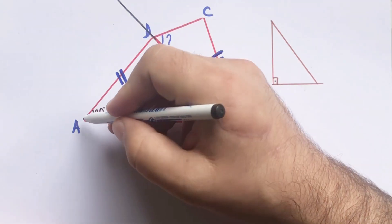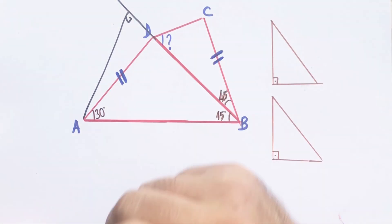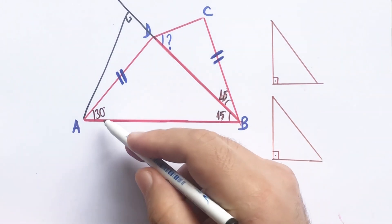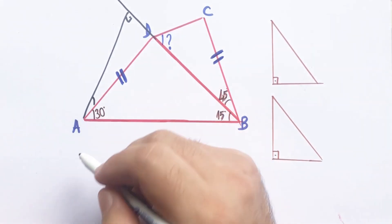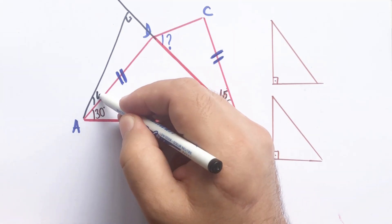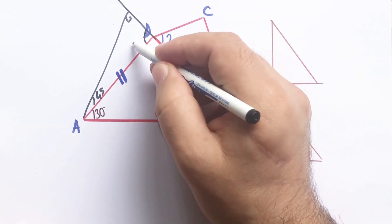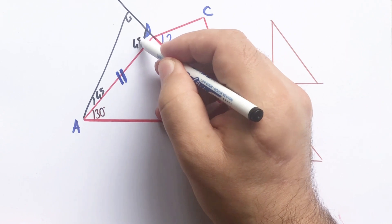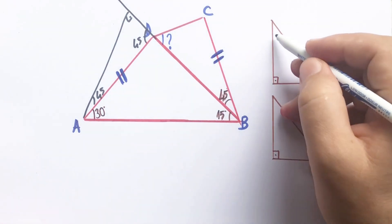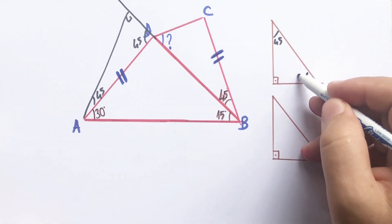Let's extend this corner. If we draw a perpendicular line across the 15 degrees, here must be 45 degrees, right? This angle is also 45 degrees.